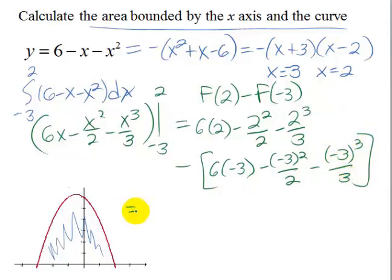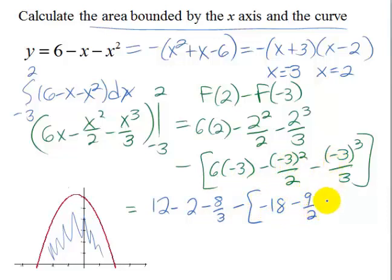So simplifying that, it looks like we have 12 minus 2 minus 8 thirds, and then we're going to subtract negative 18 minus 9 halves plus 27 thirds which is 9.